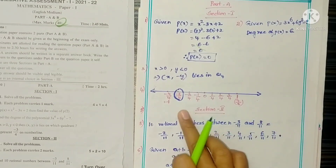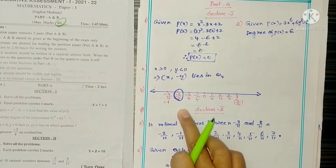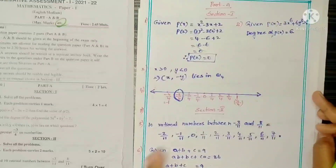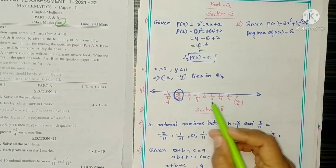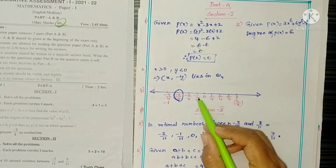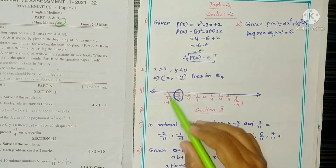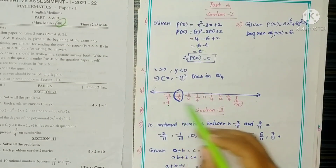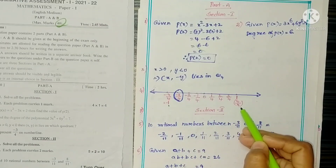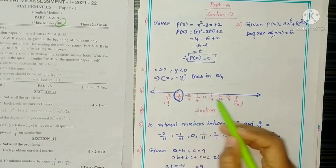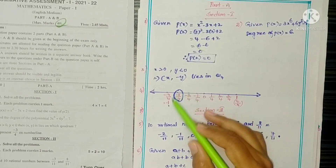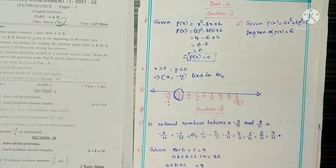Question 4: Represent -3/4 on the number line. Mark points: 0, -1, -2, -3, -4 divided by 4 equals -1. So -3/4 lies between 0 and -1, mark and circle the point.